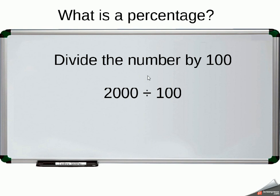So what you do is you divide the number by 100, not the percentage but the number. So in this case, 2000 divided by 100, and all we've got to do there is move the decimal place twice.